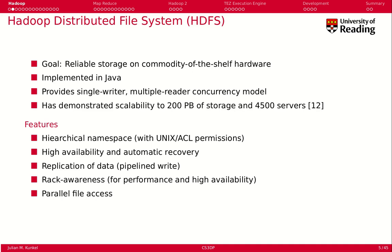The goal of HDFS was to create reliable storage on commodity off-the-shelf hardware — cheap servers you can buy anywhere, put in big racks, and interface together. It is implemented in Java and provides a single-writer, multiple-reader concurrency model, meaning only one process can write to a file but multiple readers can access it simultaneously. It is highly scalable — 200 petabytes of storage running on 4,500 servers, for example.